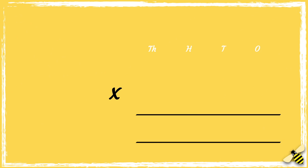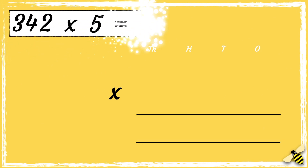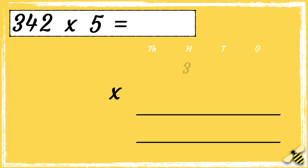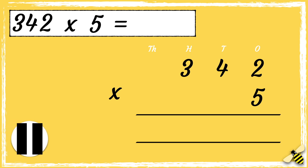Let's have a look at one more example. 342 multiplied by 5. So we have 3 hundreds, 4 tens, 2 ones, and we're multiplying that by 5. So now that we're set up we're ready to multiply. Pause the video to give you time to work out the answer. Press play when you're done.